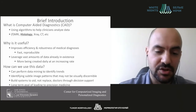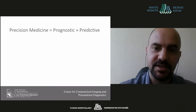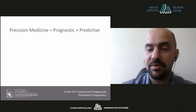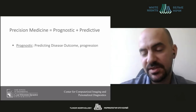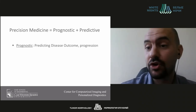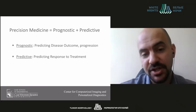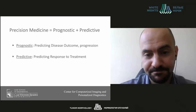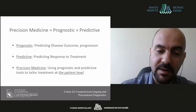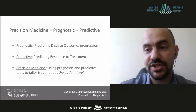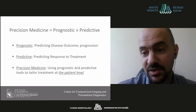The long-term goal of this research is to lead to precision medicine. Precision medicine has two components: a prognostic component, where we predict the outcome or progression of a particular disease, and a predictive component, where we predict if a patient is likely to respond to a particular treatment — essentially predicting therapy response. Combining both components allows us to optimize treatment plans at the individual patient level.